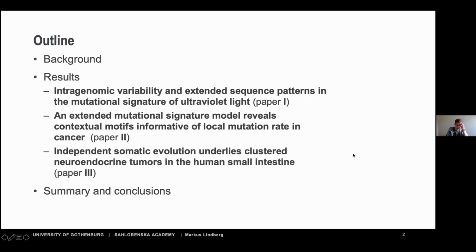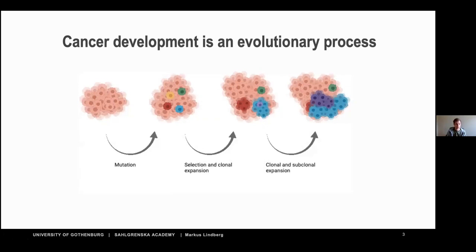A good place to start is to put mutational signatures into perspective in cancer in general. In healthy cells, cell division is tightly regulated — cells are not supposed to divide unless told to do so. But some cells might acquire certain attributes that free them from these limitations, causing them to divide more rapidly. When they do, they are under positive selection, typically via mutation, leading to clonal expansion. This process can then start again with subclonal expansion.